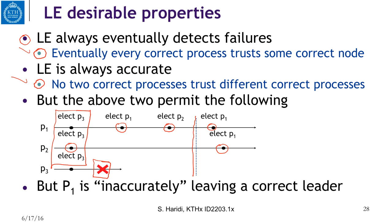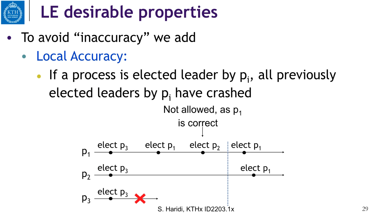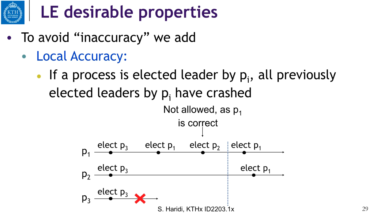But this is not the behavior we want. We want that if a process elects a leader and the leader is still alive, you stick to that leader. We don't want P1 to inaccurately leave a correct leader. So these two conditions are not sufficient — we need to add one more. To avoid this inaccuracy, we add the property called local accuracy: if a process is elected leader by Pi, then all previously elected leaders by Pi must have crashed. Adding this property prevents the misbehavior of P1 described above.